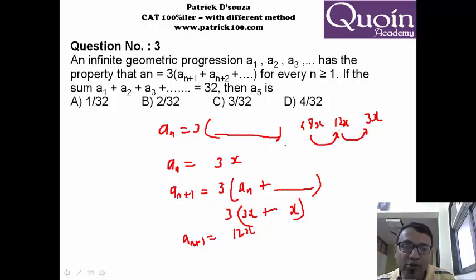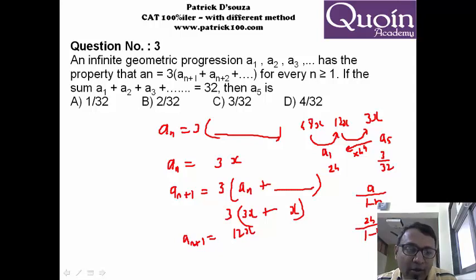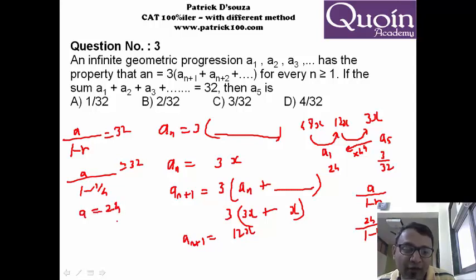The moment you get a ratio is 1 by 4, then there are 2 ways of solving it. You can go with the options and solve. For example, if I take the option 3 upon 32 as the fifth number, first number will be 4 terms before. When you are going reverse, you have to multiply by 4 raised to 4. First term is 24. Then the sum of term becomes a upon 1-r. Sum of the infinite geometric series is a upon 1-r, which is 24 upon 1 minus 1 upon 4, which will give you 32. The fifth term a5 will be 24 into 1 upon 4 raised to 4. You will get 3 upon 32.